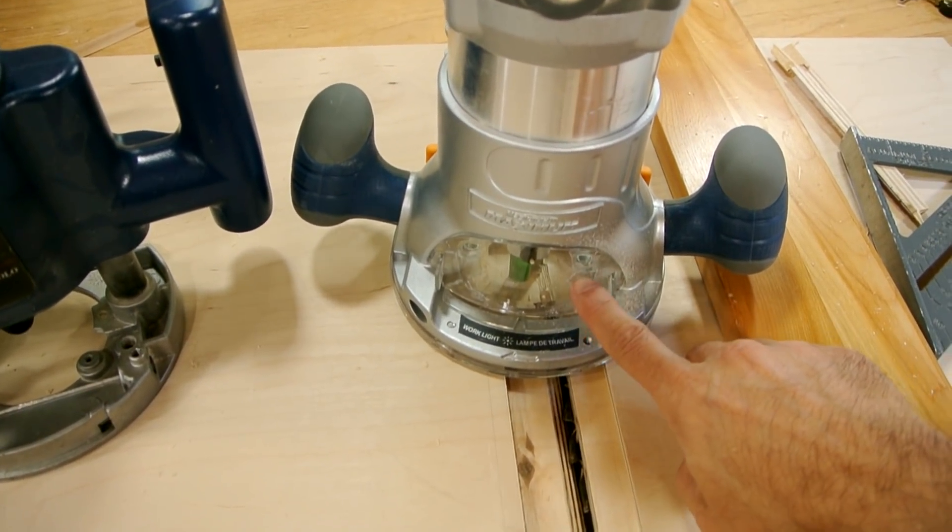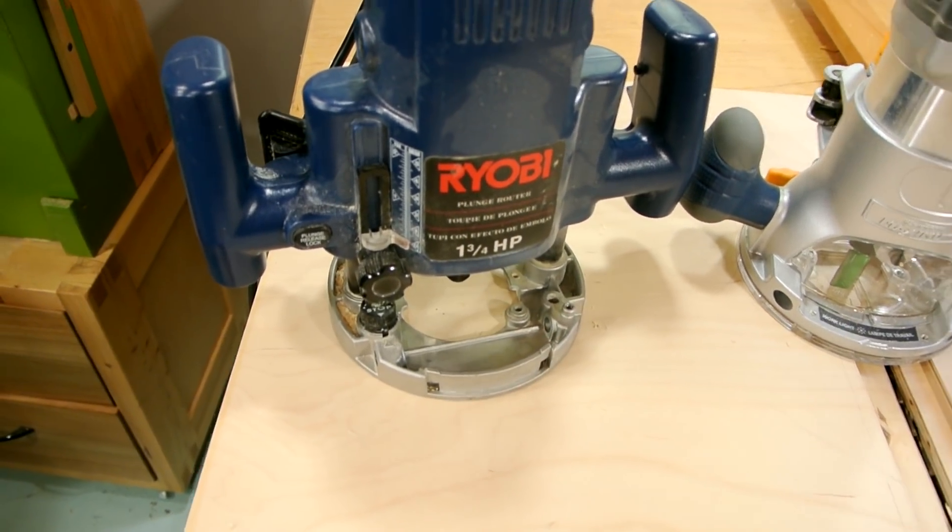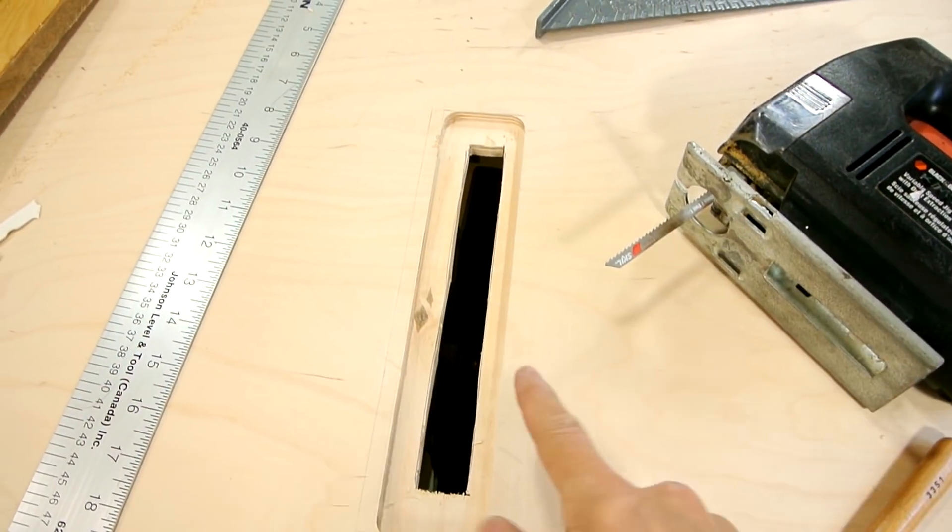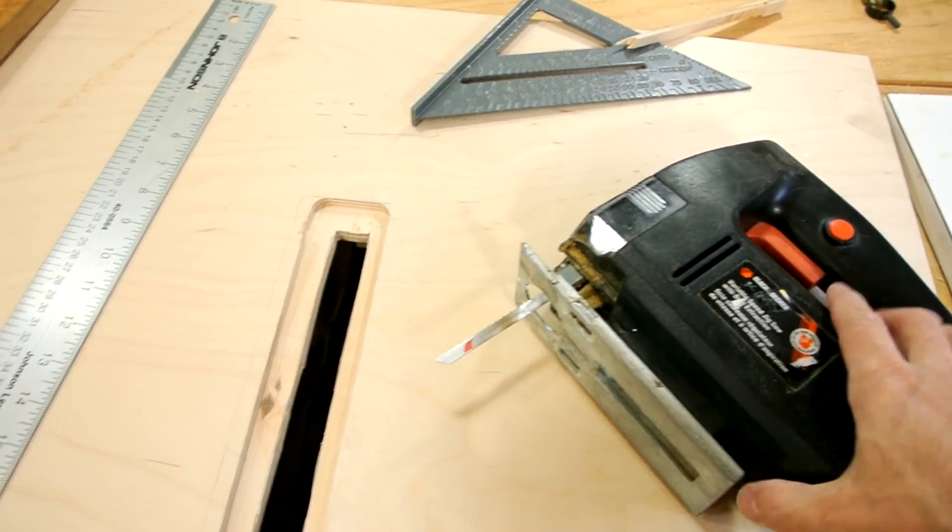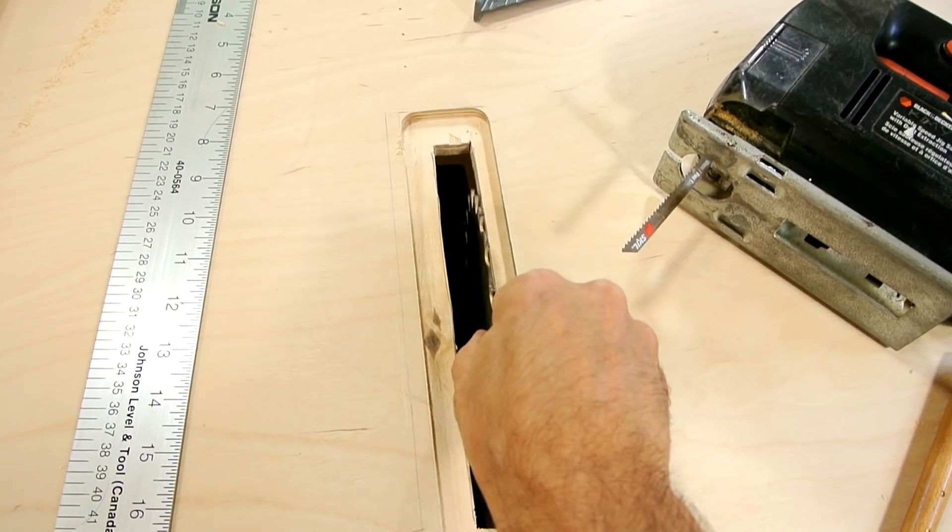Dust collection on these fixed bases is way better than what you typically get on a plunge router like this one. So I just cut a bigger slot where the blade goes with my jigsaw. That'll allow me to more easily get the blades in and out through here.